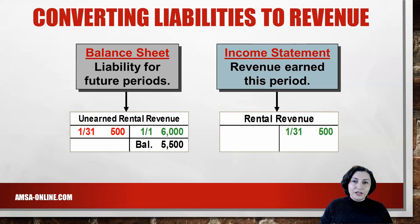The balance in the unearned rent revenue account at the end of January is $5,500, which represents 11 months of unearned rent at $500 per month. The balance in the rent revenue account for January is $500, and this amount will appear on Web's income statement. That's all for today. Thank you for watching this video — I hope you found it helpful. Don't forget to like and subscribe so you don't miss future videos. I will see you soon. Bye.